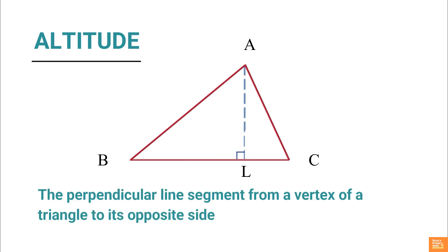Altitude: The perpendicular line segment from a vertex of a triangle to its opposite side is called an altitude of the triangle, also called height of a triangle.